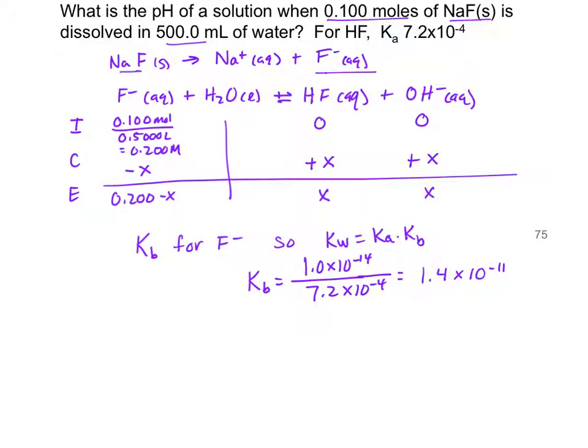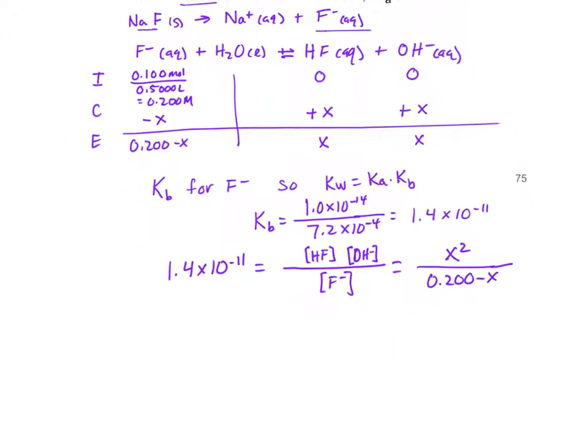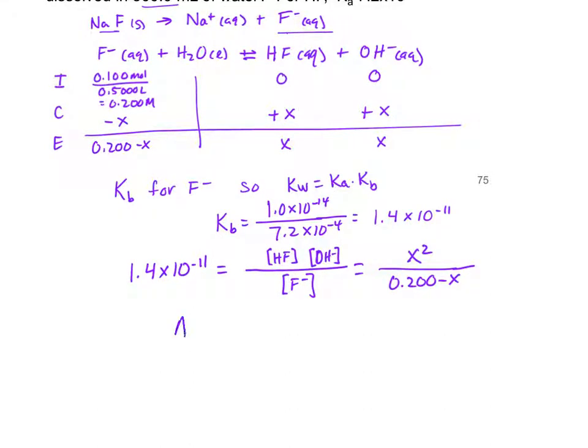Now we can set up our equilibrium constant expression with Kb. So Kb, 1.4 times 10 to the minus 11, is equal to the concentration of products HF times OH minus divided by reactant F minus. We can plug in our equilibrium concentrations. It's X for HF and X for OH minus. We'll end up with X squared in the numerator and for fluoride ion we'll have 0.2 minus X. So can we assume that X is negligible in the denominator?